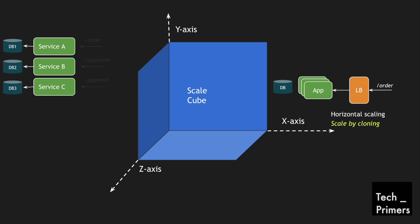Let's consider the y-axis. The y-axis denotes different types of services — service A, service B, and service C — connected to different databases: database one, two, and three. These are different domains: one is an order API, one is a customer API, and the other is a payment API. They have different types of data and are individual services. This is another way of splitting your application into multiple services, and we call this functional decomposition.